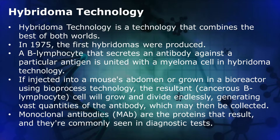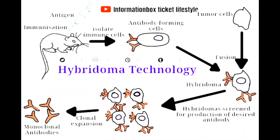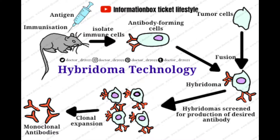Hybridoma technology is a technology that combines the best of both worlds. In 1975, the first hybridomas were produced. A B lymphocyte that secretes an antibody against a particular antigen is united with a myeloma cell in hybridoma technology. If injected into a mouse abdomen or grown in a bioreactor using bioprocess technology, the resultant cancerous B lymphocyte cell will grow and divide endlessly, generating vast quantities of antibody which may be collected. Monoclonal antibodies (MAb) are the proteins that result and are commonly seen in diagnostic tests. The steps of hybridoma technology are shown in the figure.